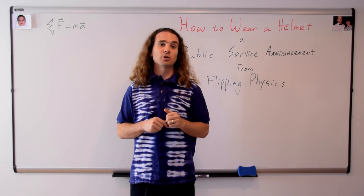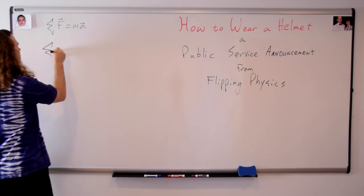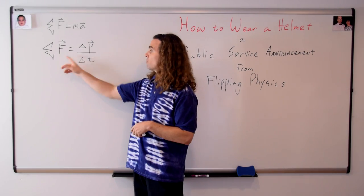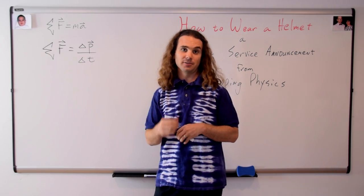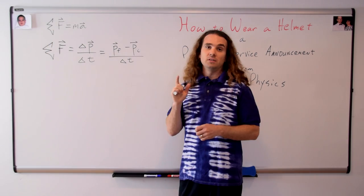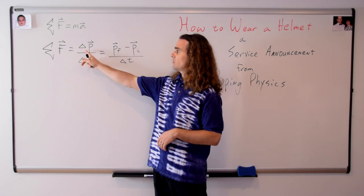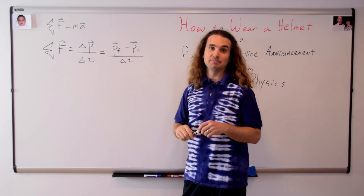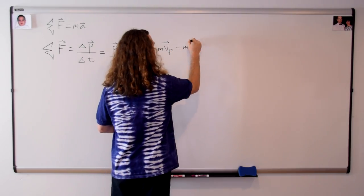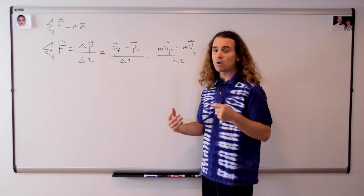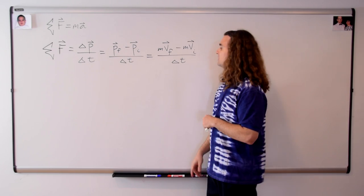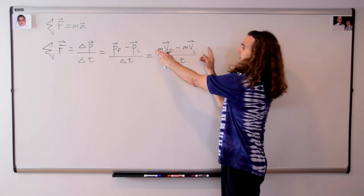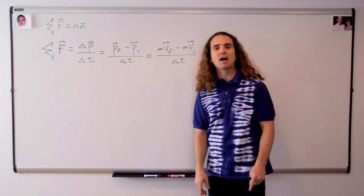I actually need Newton's second law in terms of momentum, which is: the net force equals the change in momentum over the change in time, where both force and momentum are vectors. Delta, or change in, always means final minus initial. So the change in momentum equals the final momentum minus the initial momentum. And momentum equals mass times velocity. Therefore, the net force equals mass times velocity final, minus mass times velocity initial, that whole quantity divided by the change in time.